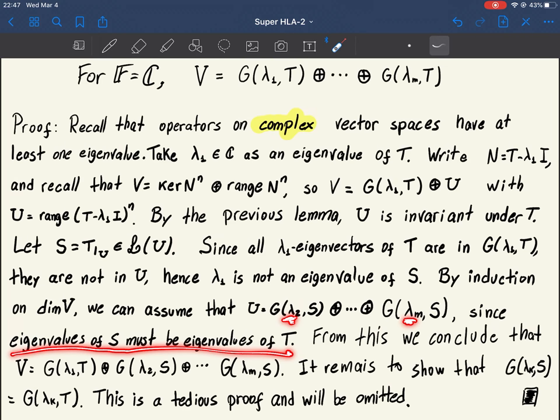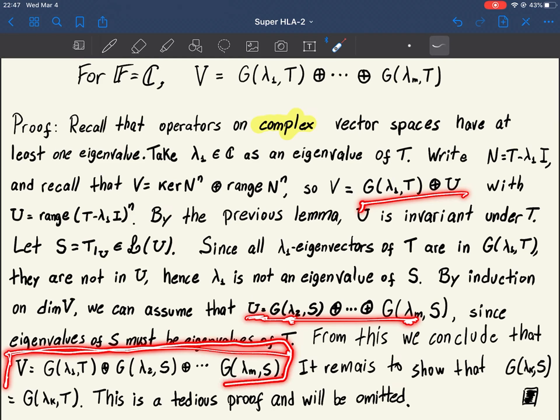So writing back, if U is this and we substitute it here, we have this decomposition for V. V is the direct sum of its generalized eigenspace with respect to one eigenvalue, direct sum with generalized eigenspaces, not of T, but of S, with respect to all the eigenvalues of S, which are also all of them are eigenvalues of T.